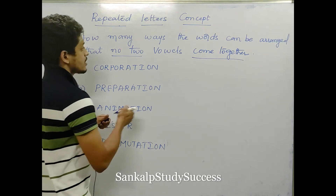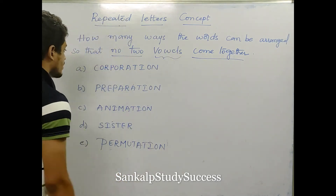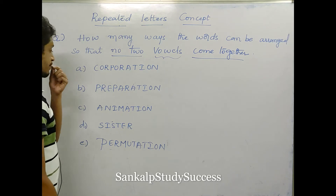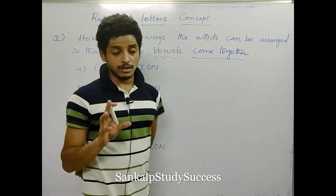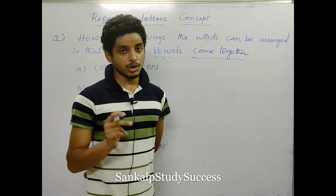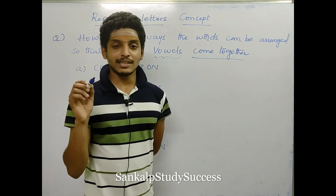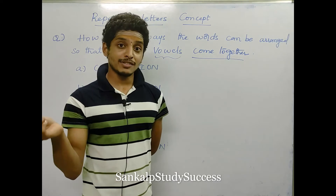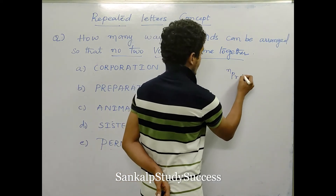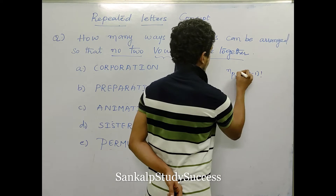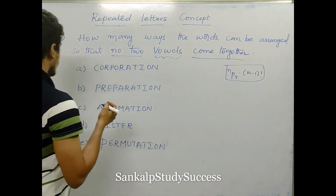So, no two come together. When you have no two come together, you have a shortcut. If you have permutation — suppose NPR — then we have NPR into (N-1) factorial. This is the shortcut: NPR into (N-1) factorial when you have no two come together.